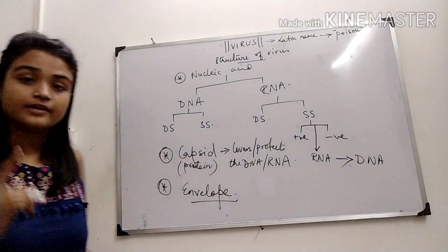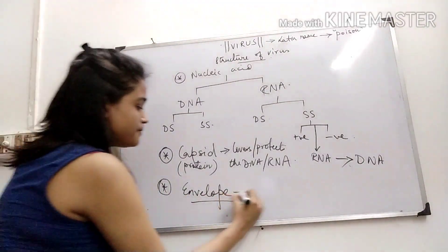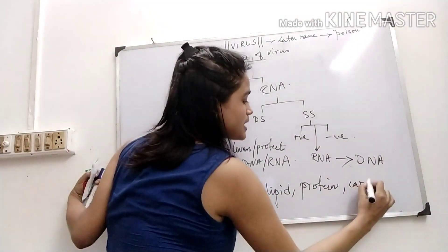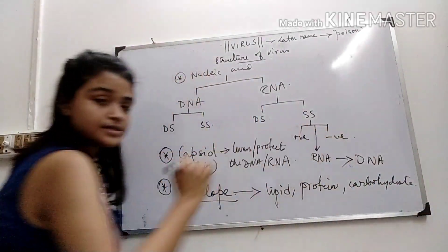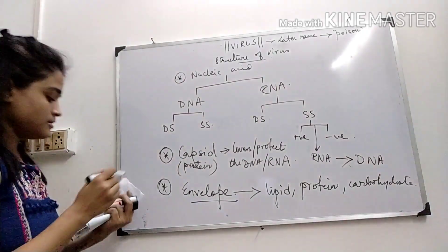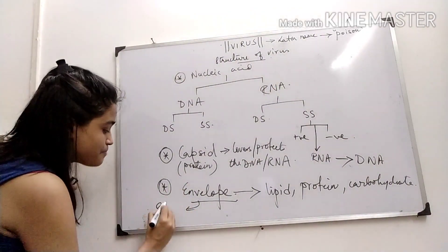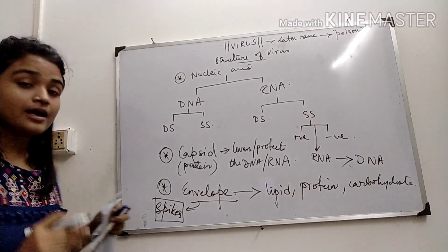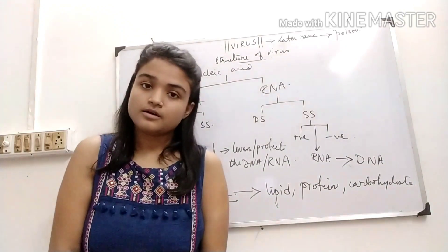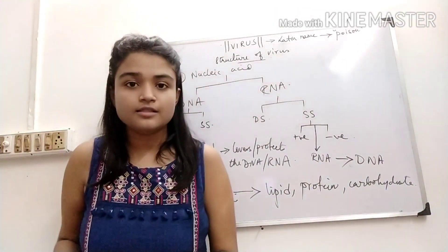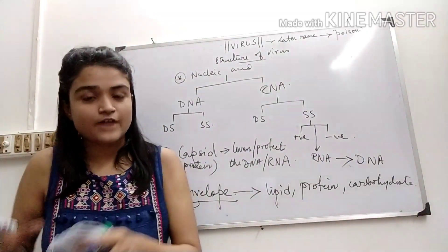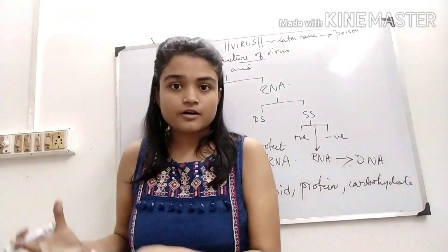The envelope is also present in some viruses, like influenza. This envelope is mainly made up of lipid and protein — we call it lipoprotein — and sometimes carbohydrates. Glycoproteins can be present in the envelope. This envelope sometimes contains spikes, and these spikes help the virus attach to the surface of the host cell.